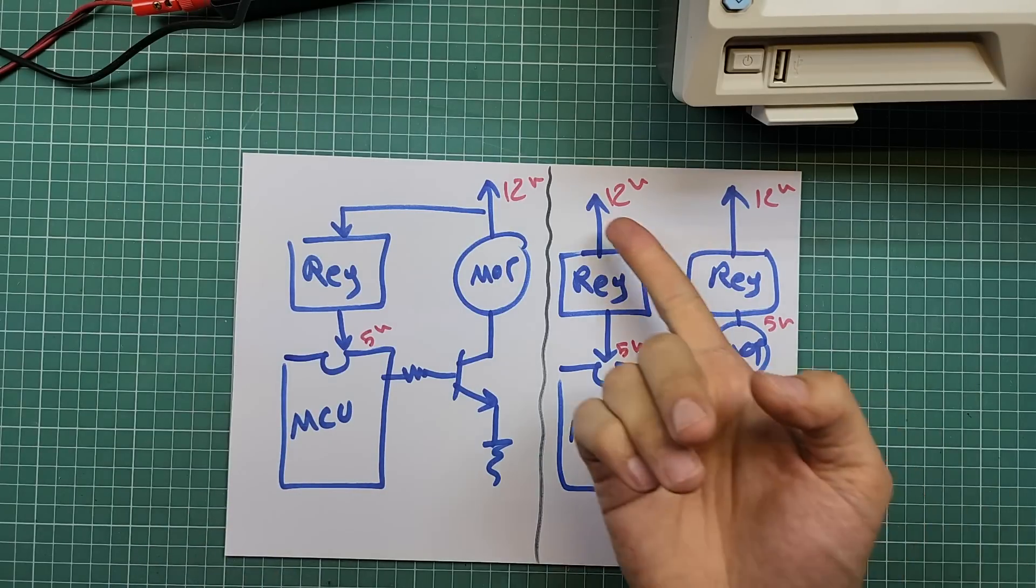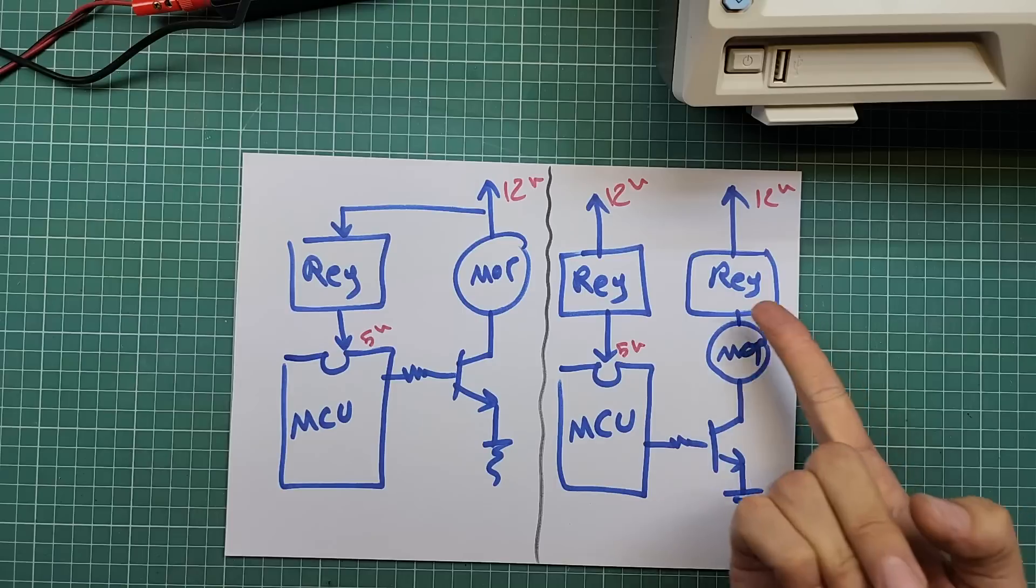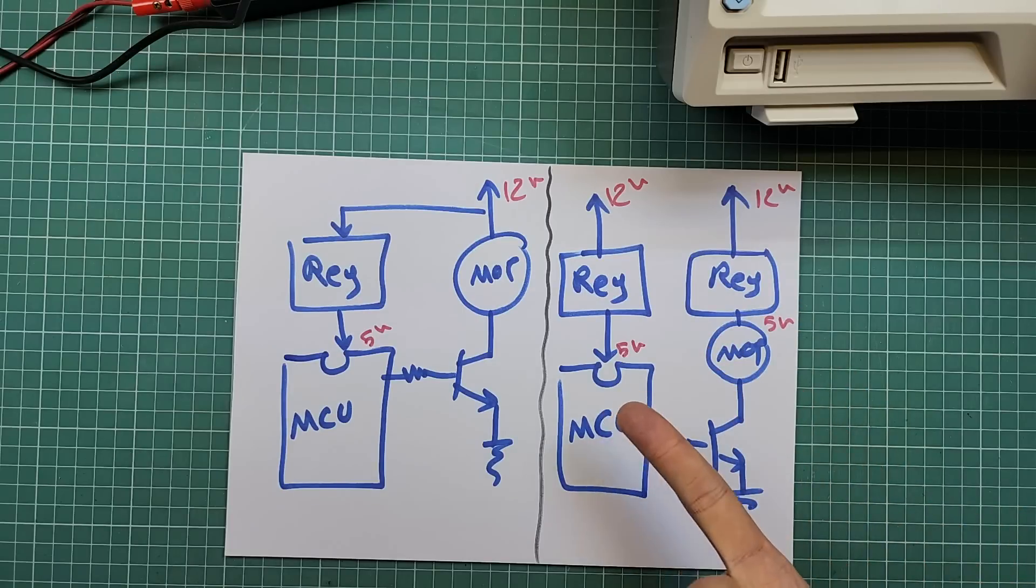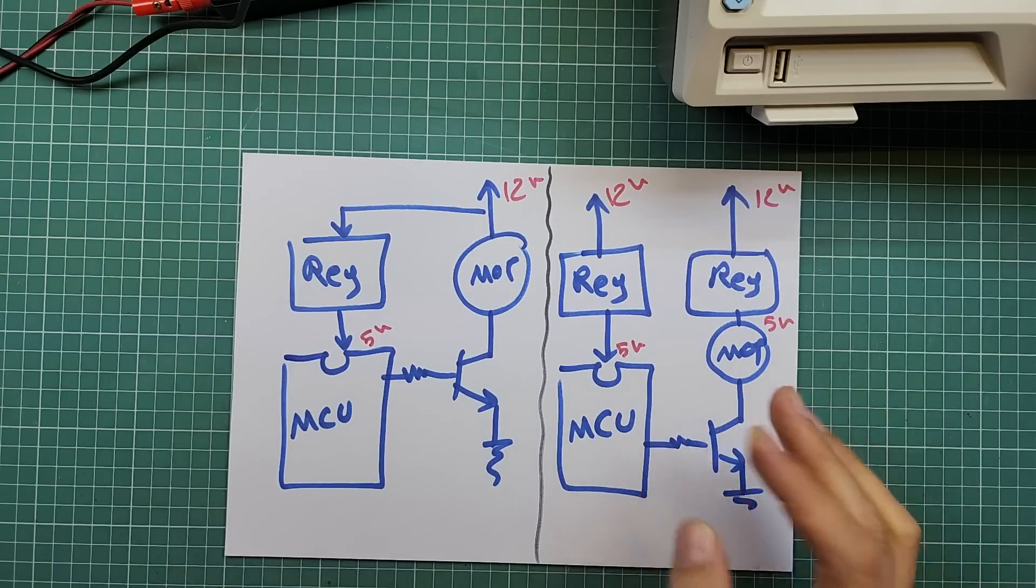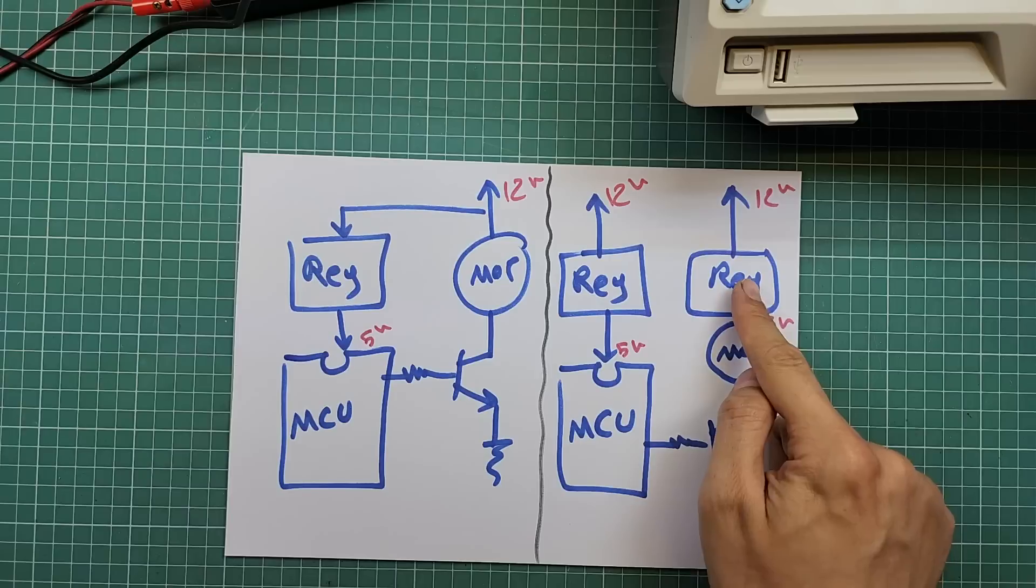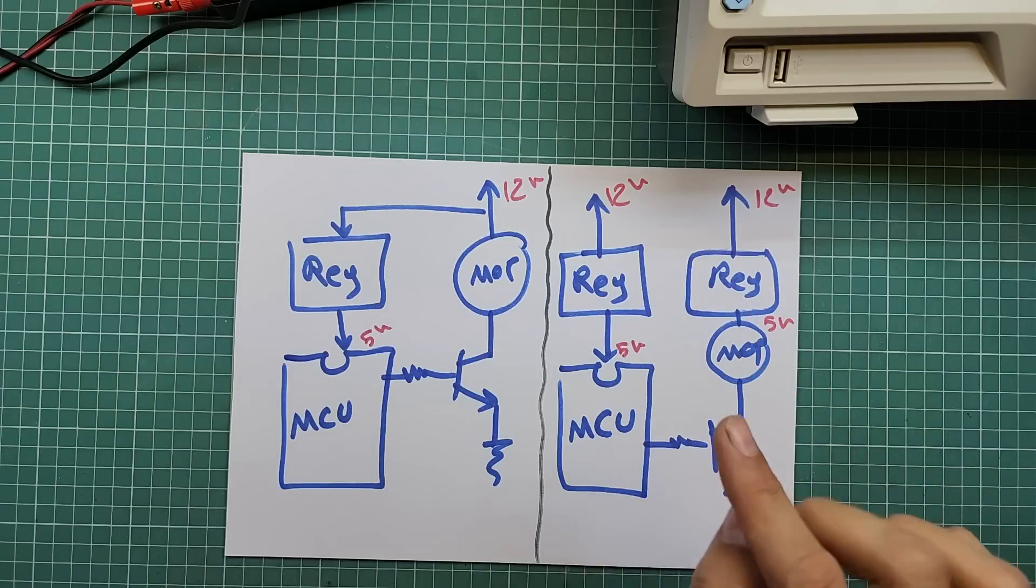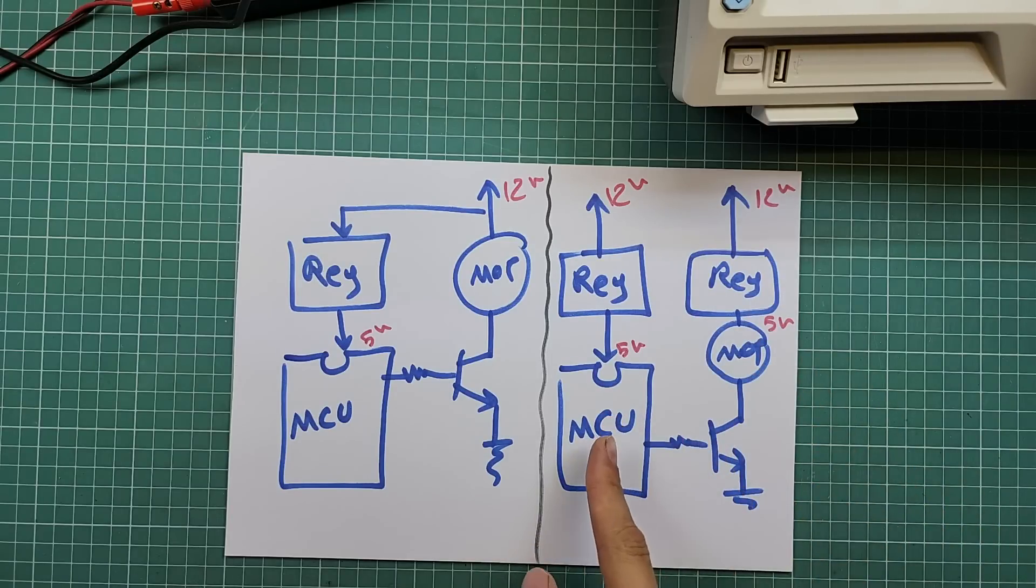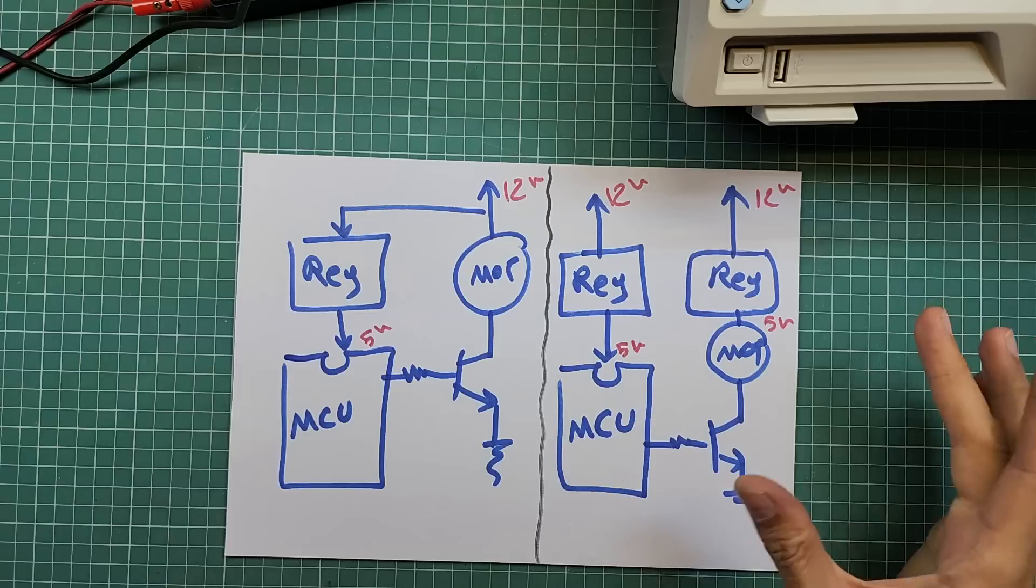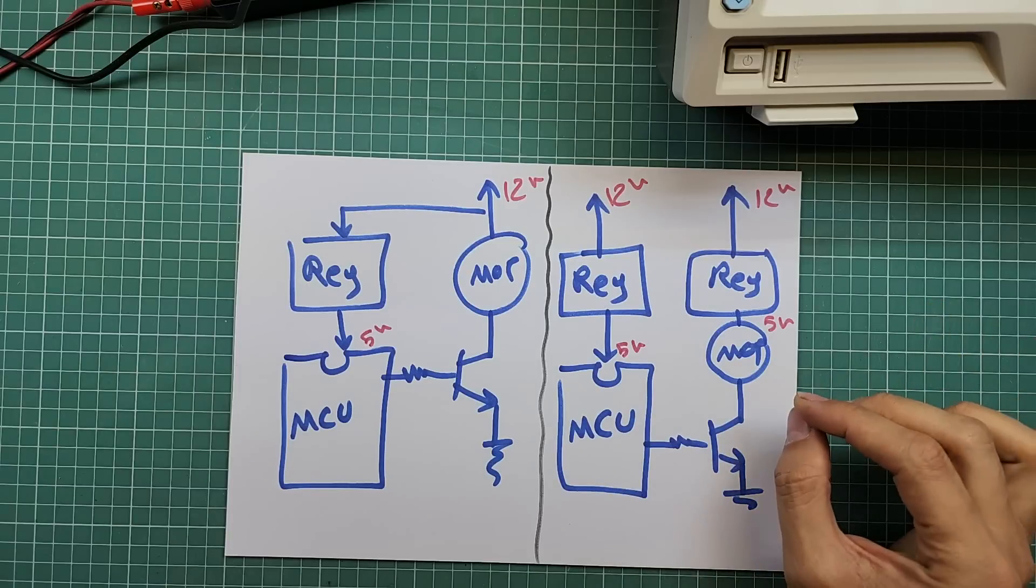The second scenario is this, where the VCC is 12 volts and the DC motor is 5 volts and MCU is operating on 5 volts. Here we have used two separate regulators to provide power supplies for the motor and the MCU separately. Also, in this case, the regulators will block the noise from reaching the MCU. We have discussed applications of voltage regulators where the regulator has to provide a significant amount of current.